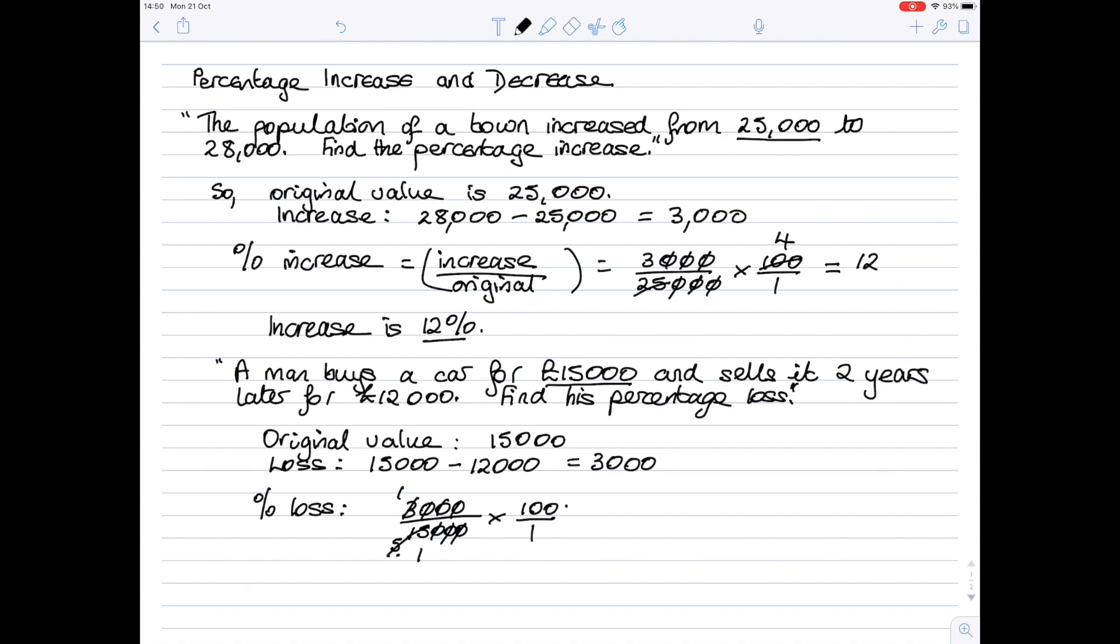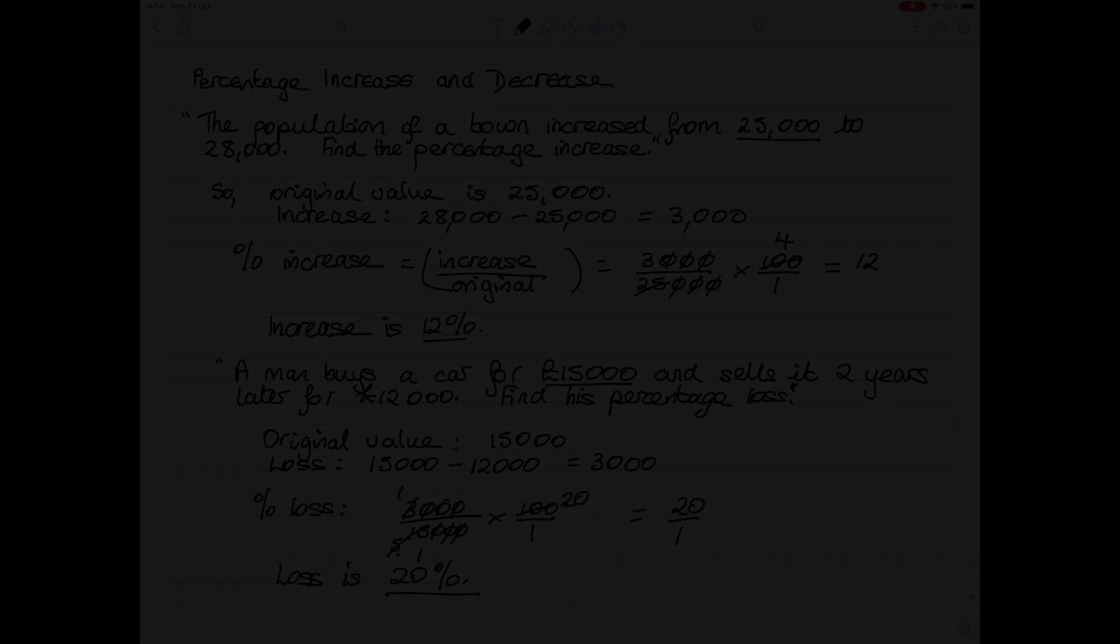5 goes into 5 once, 5 goes into 100 twenty times, so we're left with the easy sum 1 times 20, which is 20, and 1 times 1, which is 1. So our loss is 20 percent.